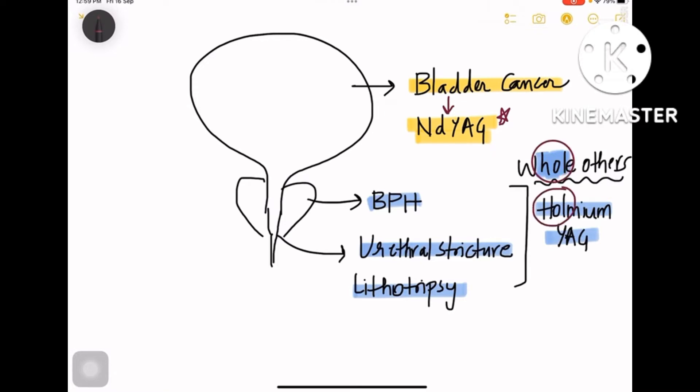Coming to all the others, like every other surgery in urology, you use Holmium:YAG. Whole others is Holmium:YAG, used for benign prostatic hypertrophy, urethral stricture, and lithotripsy. So for different surgeries you use Holmium:YAG, whereas for bladder cancer you use Nd:YAG.